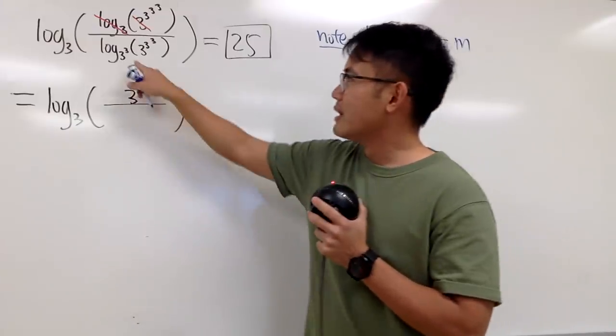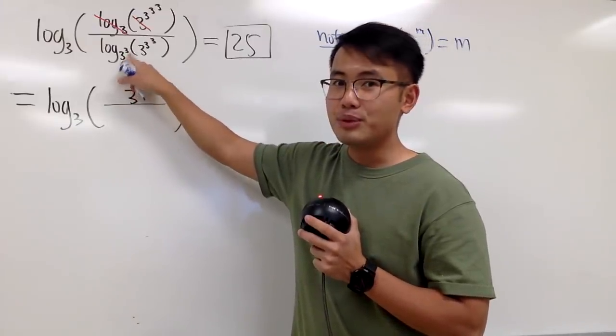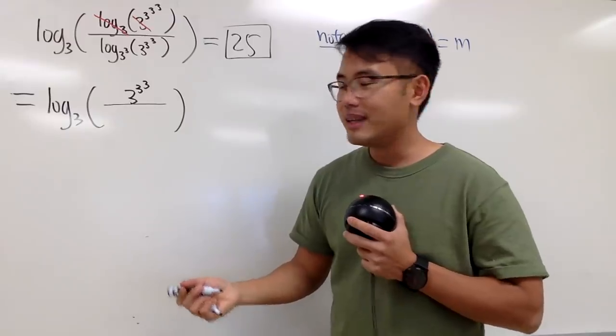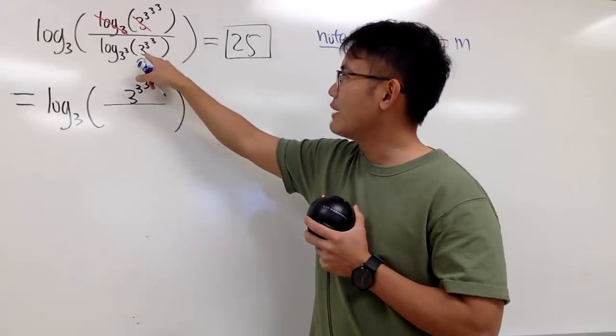Be careful though. The base of this log is 3 to the 3, namely 27. But if you look at the inside, we have 3 to the 3 to the 3.